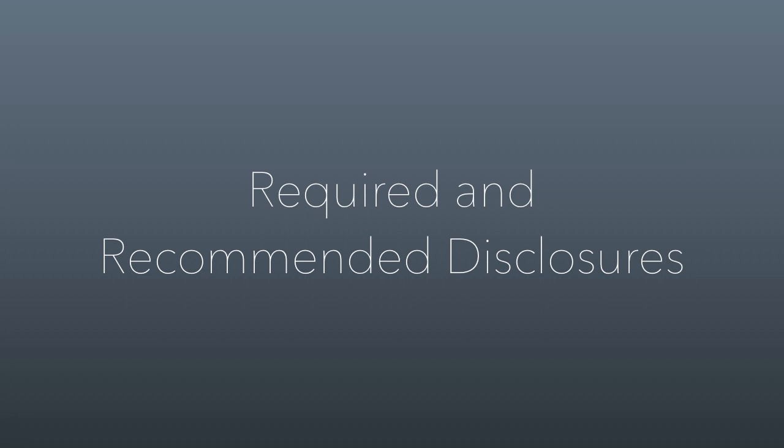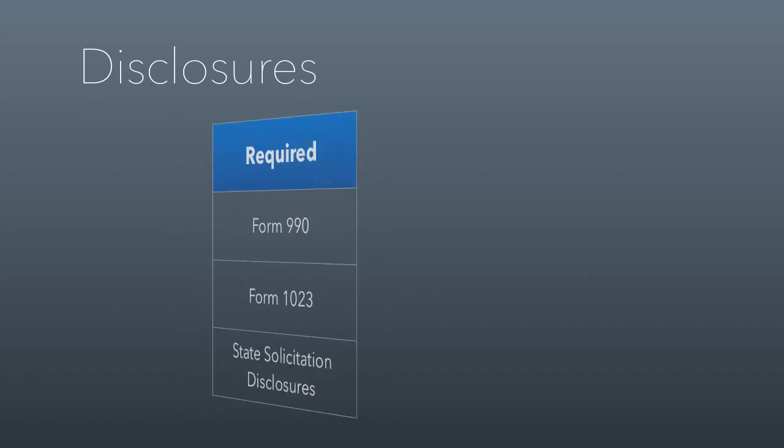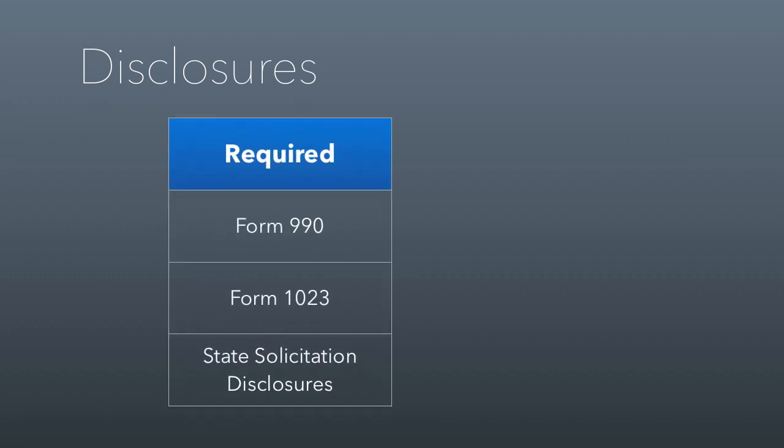Let's talk about required and recommended disclosures. Most of this first section is refreshing what we've already covered earlier in the semester. By law you have to disclose your 990 or 1023 — both are tax forms filed with the IRS. The 990 is your annual tax form and must be public for the last three years of filings. The 1023 is the form you file to obtain your tax-exempt status, and regardless of how long ago you filed it, you must keep a copy available for public inspection.